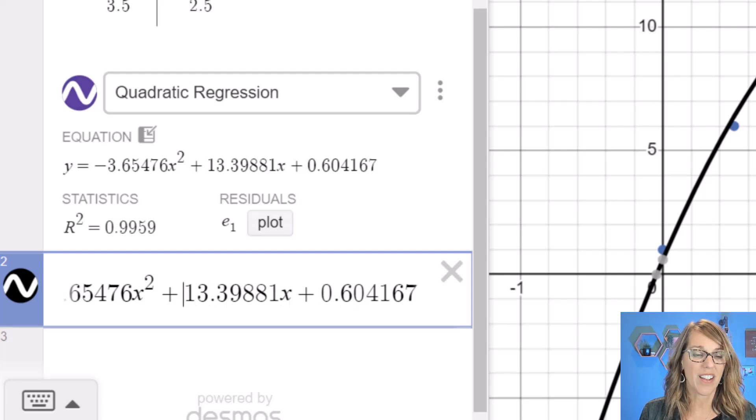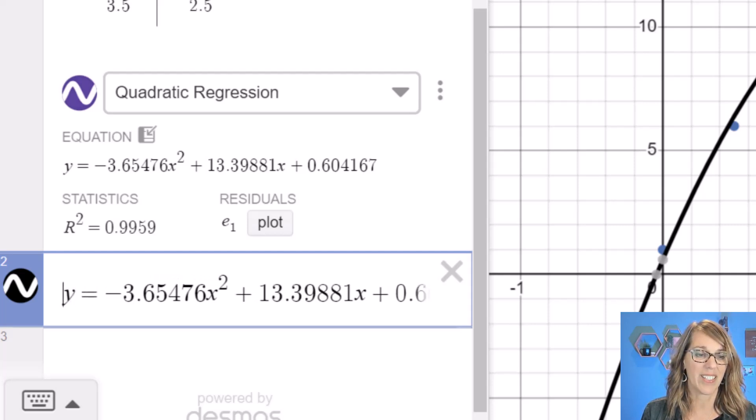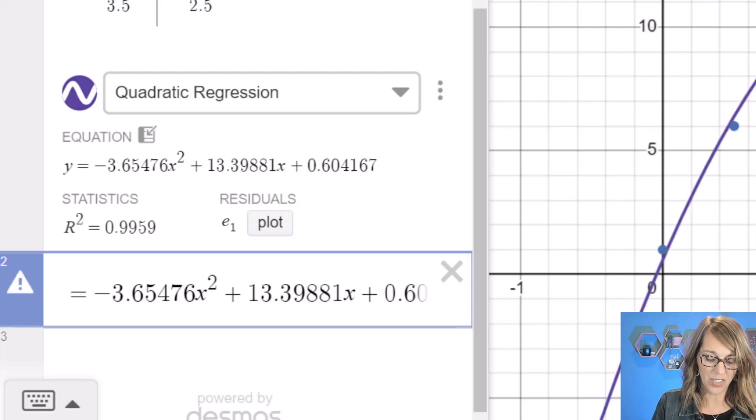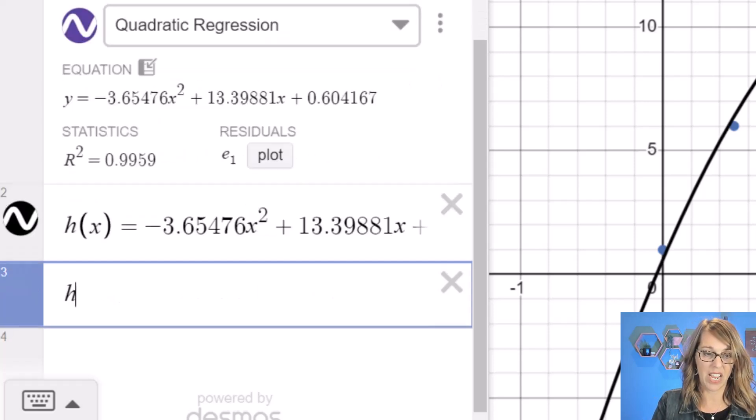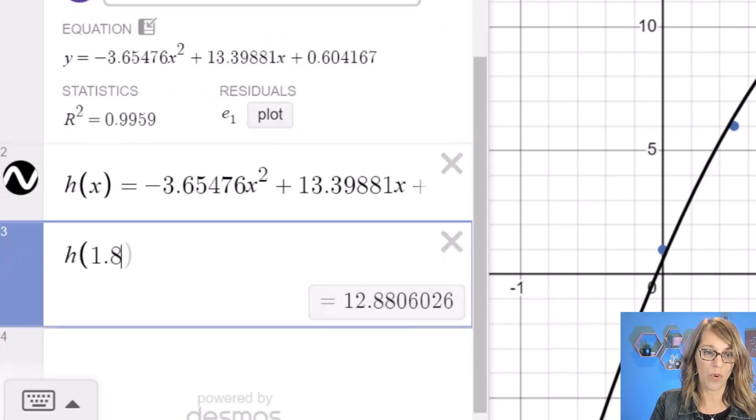You could change the rounding on this. You could make some edits. What I really want to do is just to change the generic y into an h of x for my height. And then I could evaluate it. Say what is h, what's the height at 1.8 seconds, for example.